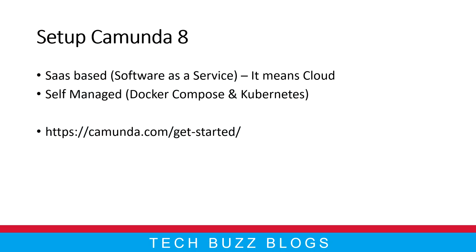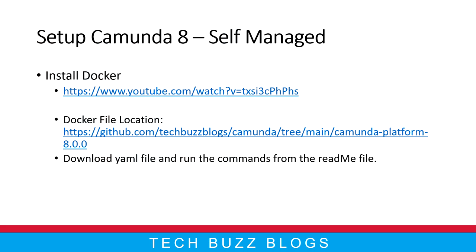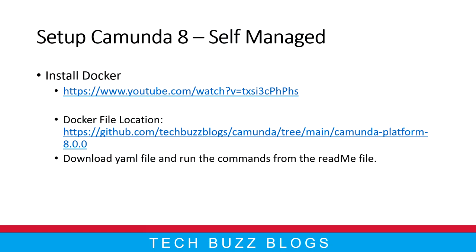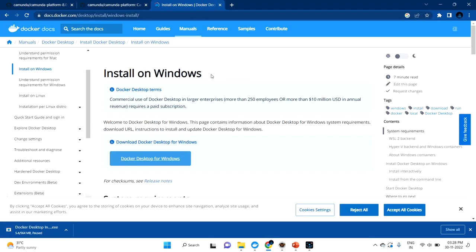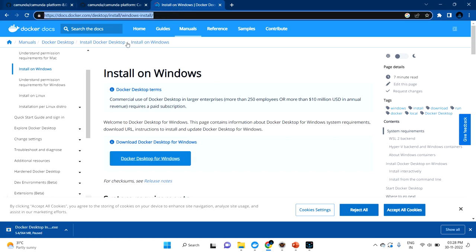We will use Kubernetes for the production environment, and Docker Compose for the development environment. So let's see in this video how to set up each and every step. In the first step, you need to install Docker on your computer. If you don't know how to install Docker, I have a separate video on that. I will also teach you briefly in this video. This is the URL where Docker can be downloaded.